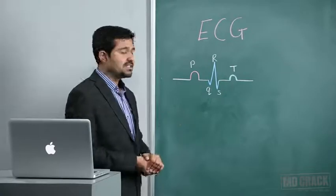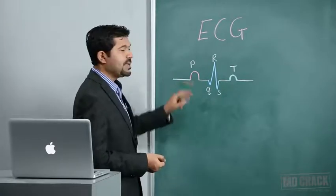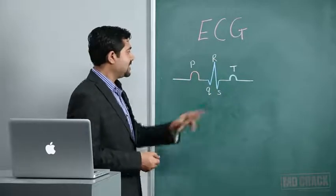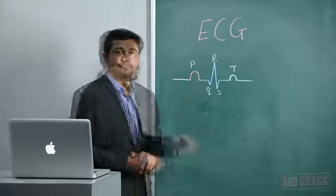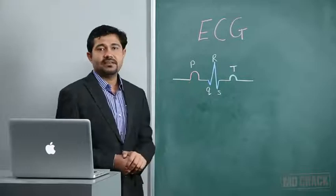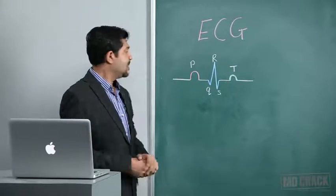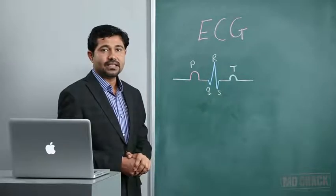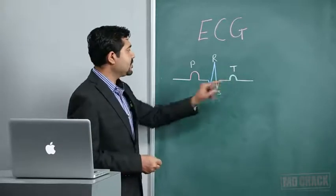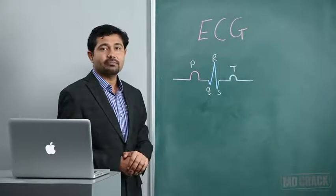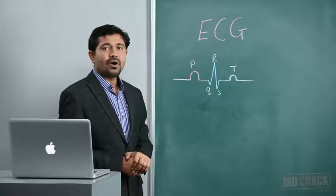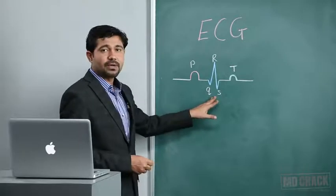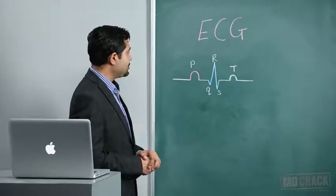This is the picture of the normal ECG. These are the waves: this is called the P wave, then followed by the QRS complex, and then followed by the T wave. P wave represents atrial depolarization, QRS complex represents ventricular depolarization, whereas the T wave represents ventricular repolarization. The wave of atrial repolarization is suppressed in the large QRS complex.